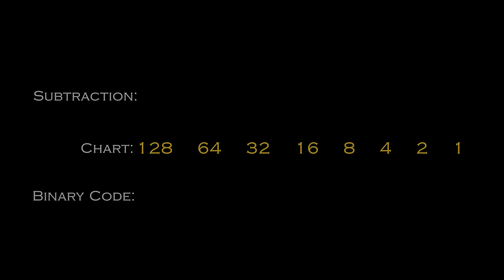So firstly, you can start off by drawing this simple chart by hand. It consists of numbers that go up in succession from left to right in increments of the power of 2: 1 times 2 equals 2, 2 times 2 equals 4, 4 times 2 equals 8, and so on. Then of course you'll need a number to translate into binary code. For this particular example, we'll use 84.